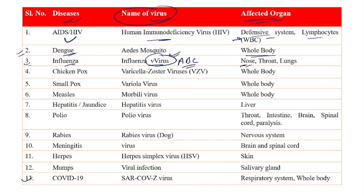Number four: Chickenpox is caused because of Varicella Zoster virus and it affects the whole body. Number five: Smallpox is also caused by Variola virus and affects the whole body. Many countries have already tackled chickenpox and smallpox, though some African nations are still battling them. These are still important from an examination point of view.